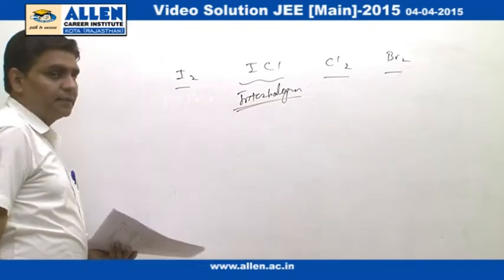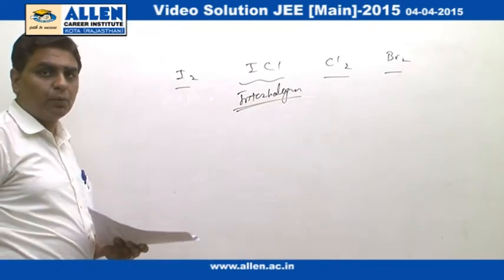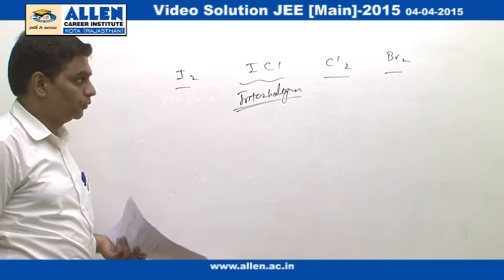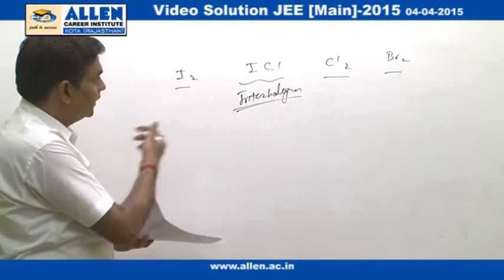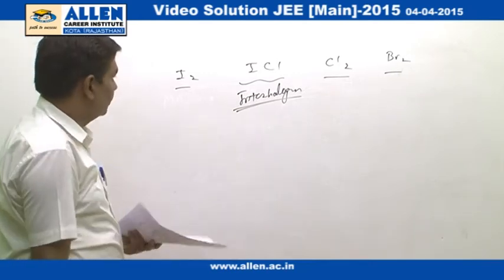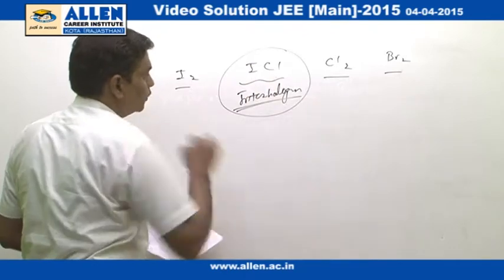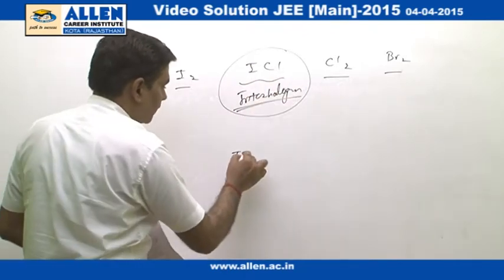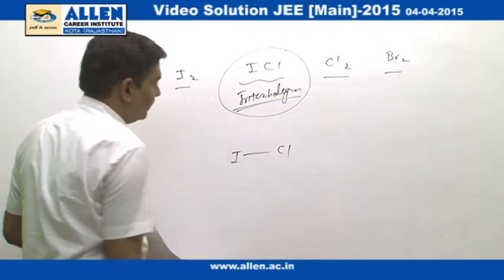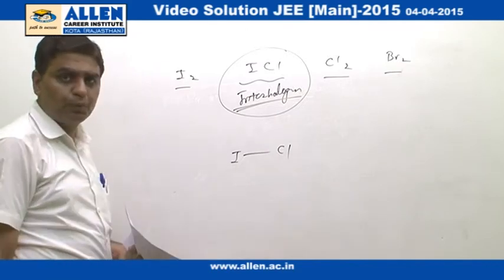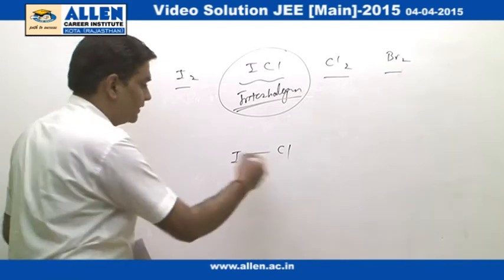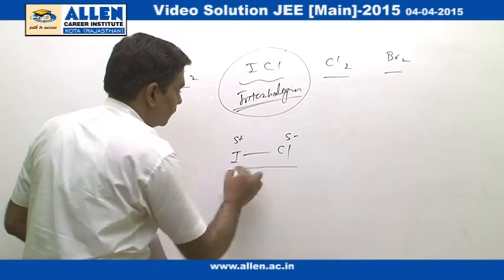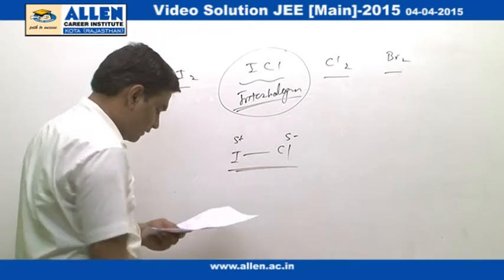All inter-halogen compounds are more reactive compared to halogens, except F₂. Since F₂ is not in the given question, ICl is the most reactive compound. The higher reactivity of inter-halogen compounds is due to the polarity of the I-Cl covalent bond. Answer is option 2.